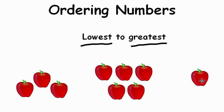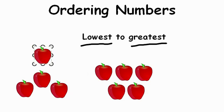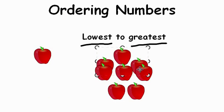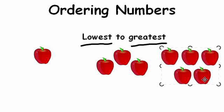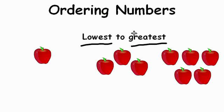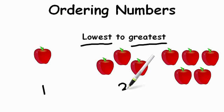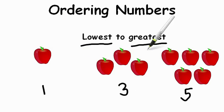You're right, one is the smallest amount, so we're going to have to move one over. Now between three and five, which is the next biggest number? That's right, three is the next biggest, which means five is the biggest, or greatest. So if we're putting these in order from lowest — smallest — to greatest, we would put the one apple first, then the three, and then the five apples, because that's the same as going one, three, five — smallest, or lowest, to greatest, or biggest.